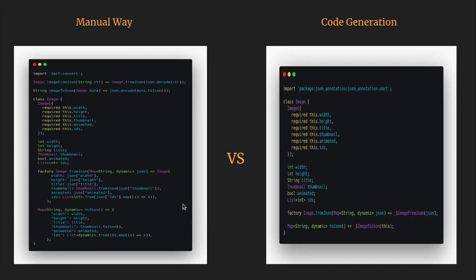As you can see in these code snippets, the manual way of JSON serialization becomes lengthy since you have to write all the encoding and decoding logic by yourself. It also creates a high chance of having various typo errors. But in the code generation way, you can see there are only two lines of code, so the amount of code we have to write is far less. All the logic used for encoding and decoding will be automatically created for you by the library. In the next video, we will dive deeper into the methods of JSON serialization. Till then, keep watching. See you in the next video.